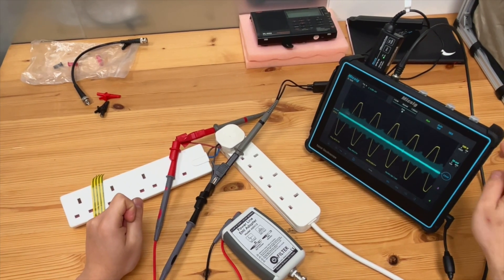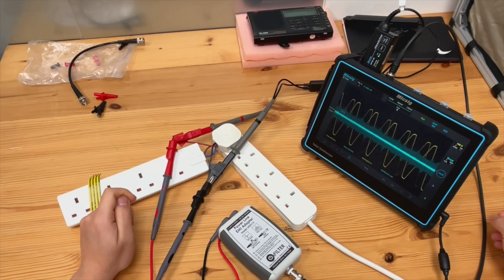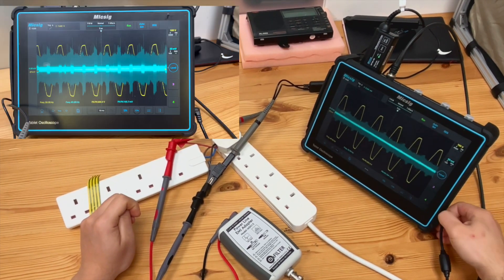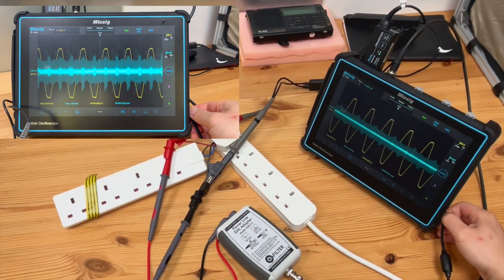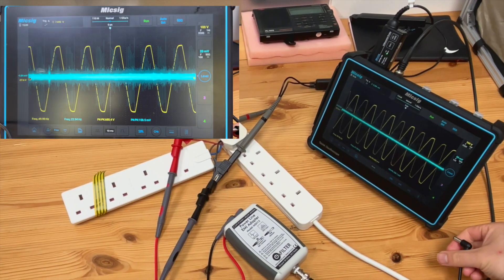Right now, as you can see, this oscilloscope is powered by its AC to DC charger. So now if I disconnect it, just look at the noise we measured. You see, it's very different.